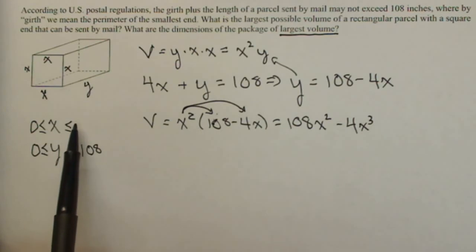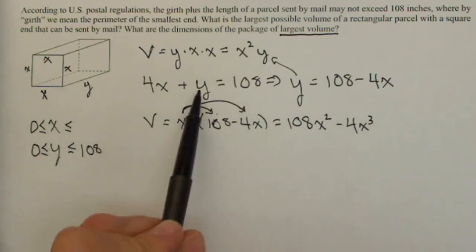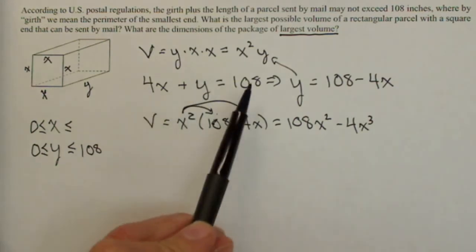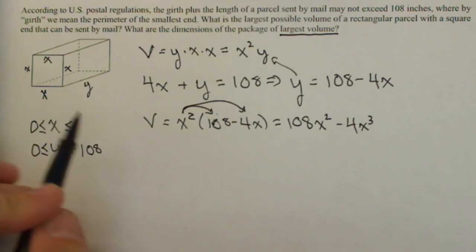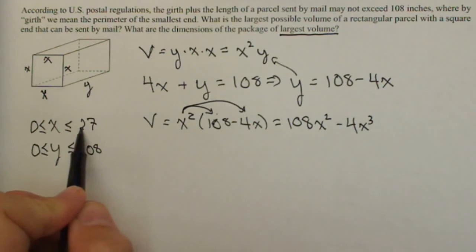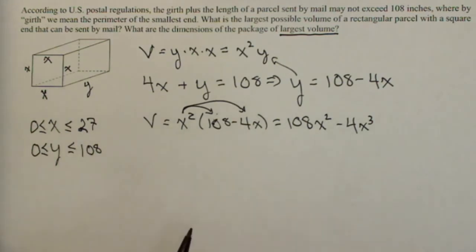We know that y has to be somewhere between 0 and 108. x, very similarly, has a largest size too. That's if y is 0. If y is 0, that means 4x equals 108, which means x has to be 1 fourth of 108 or 27. So those are our constraints on our variables x and y.